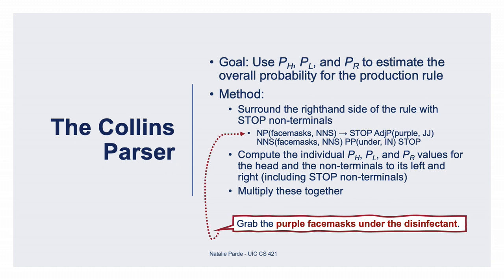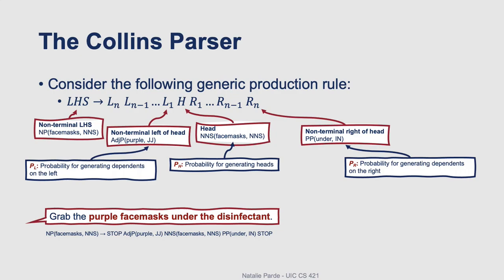So if we had a sentence like 'grab the purple face masks under the disinfectant,' and we were interested in the noun phrase 'purple face masks under the disinfectant,' we could represent it like this. Taking that example and computing our necessary probabilities, we could start with the head. To compute the probability for the head word, we need to find the probability of the head word occurring given the parent constituent on the left-hand side of the production rule.